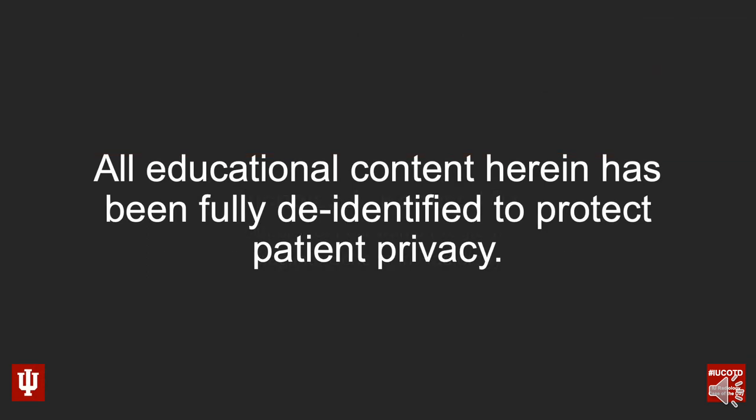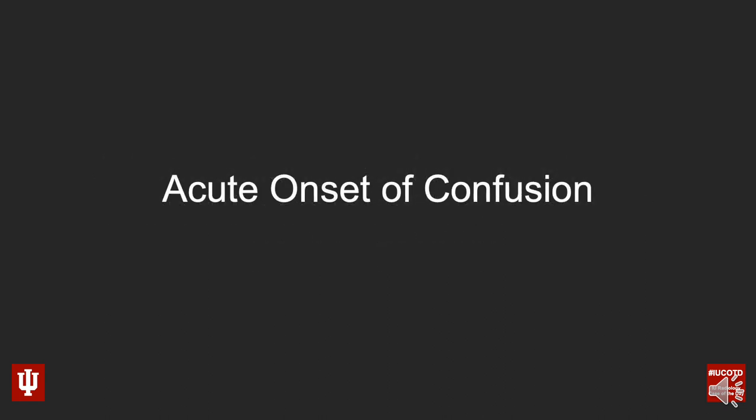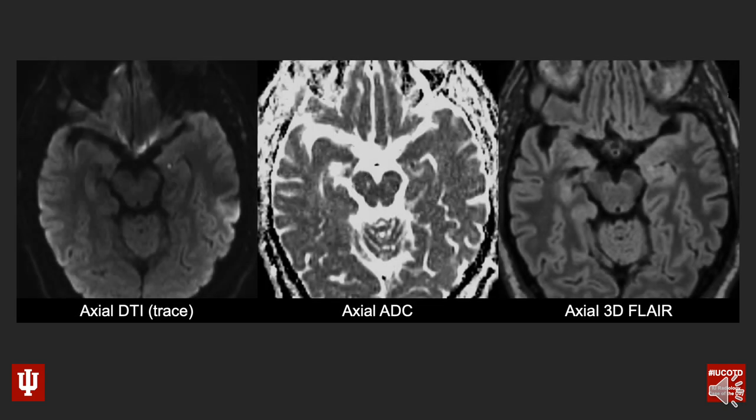As always, I'd like to start out by saying that all the educational content as part of this presentation has been completely de-identified in order to protect patient privacy. This is a patient who presented with an acute onset of confusion, and I have three images for you to look at. The image on the left is an axial diffusion tensor image — this is the trace sequence.